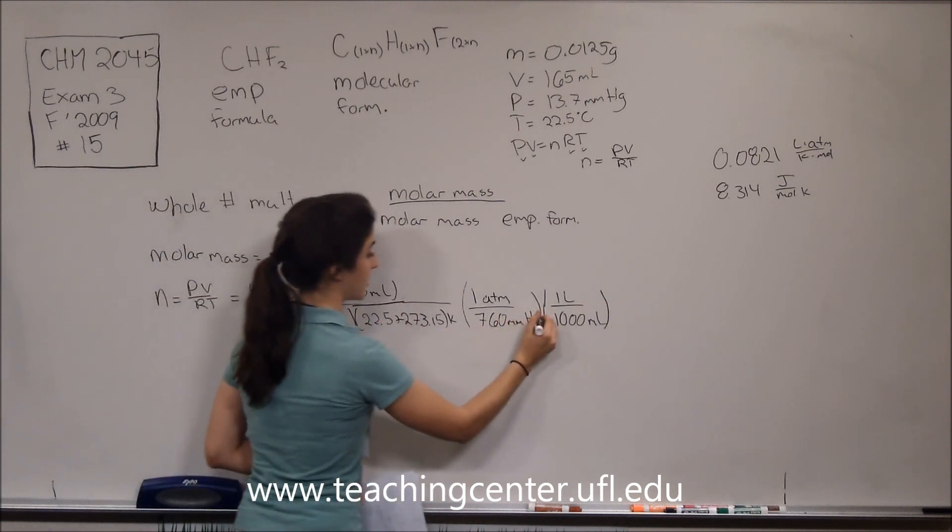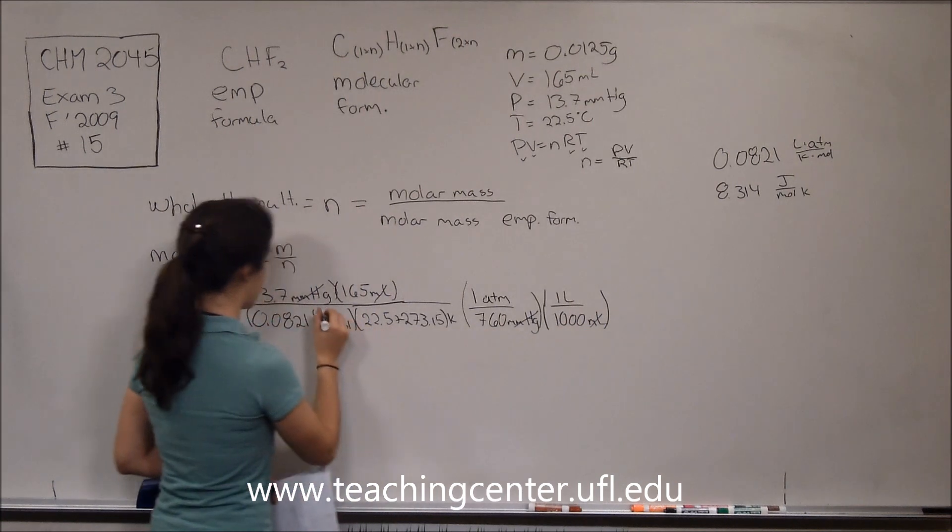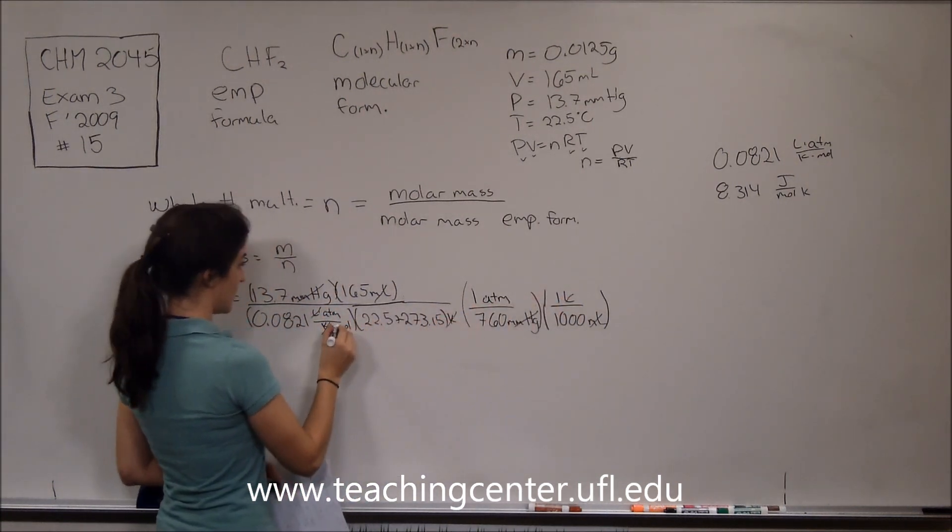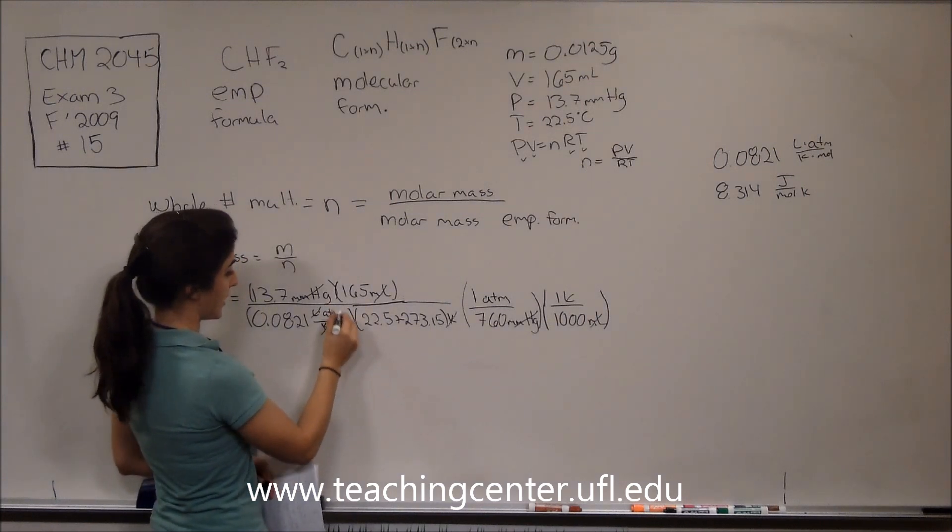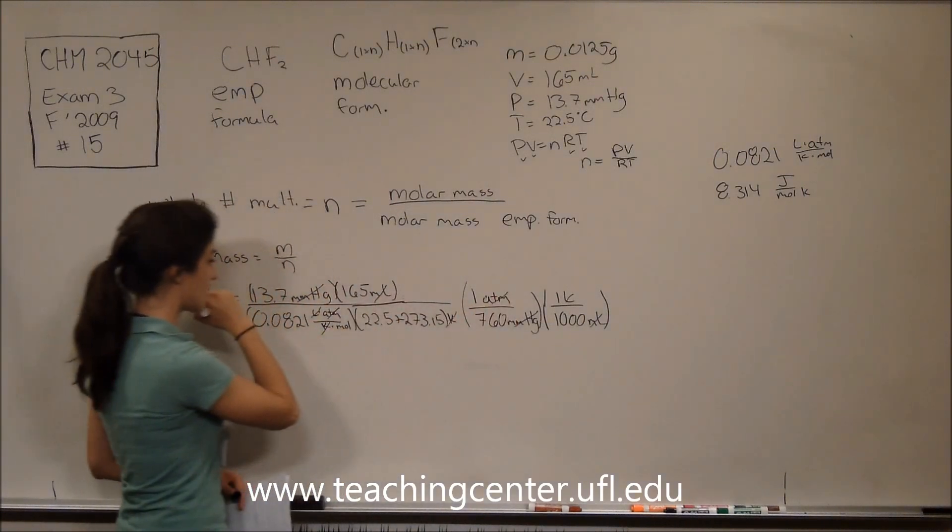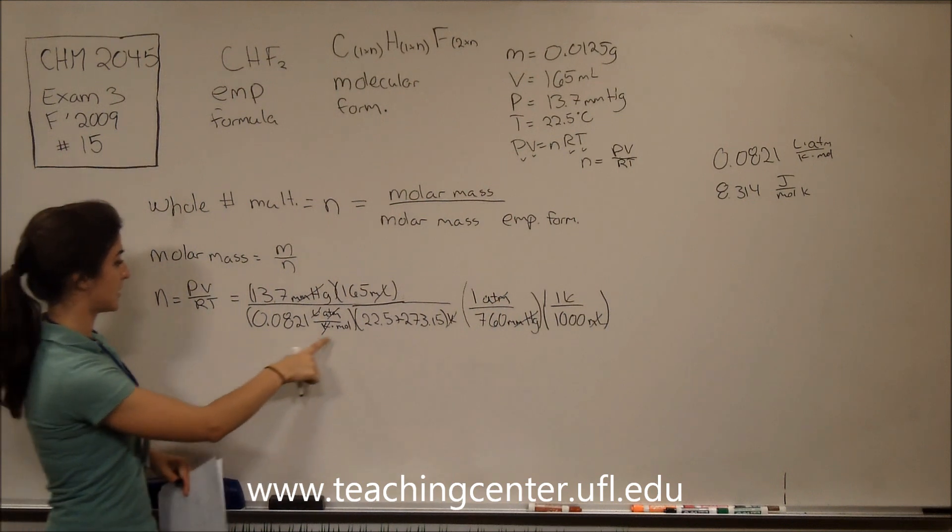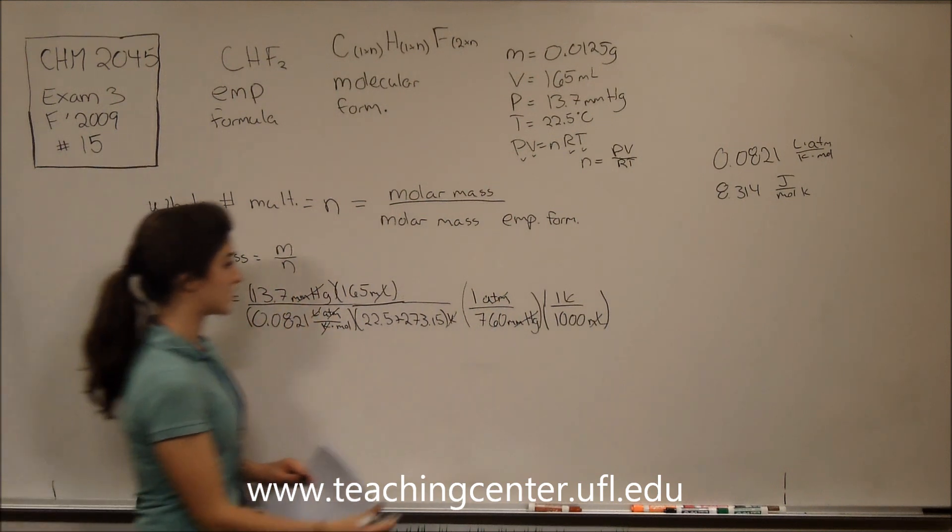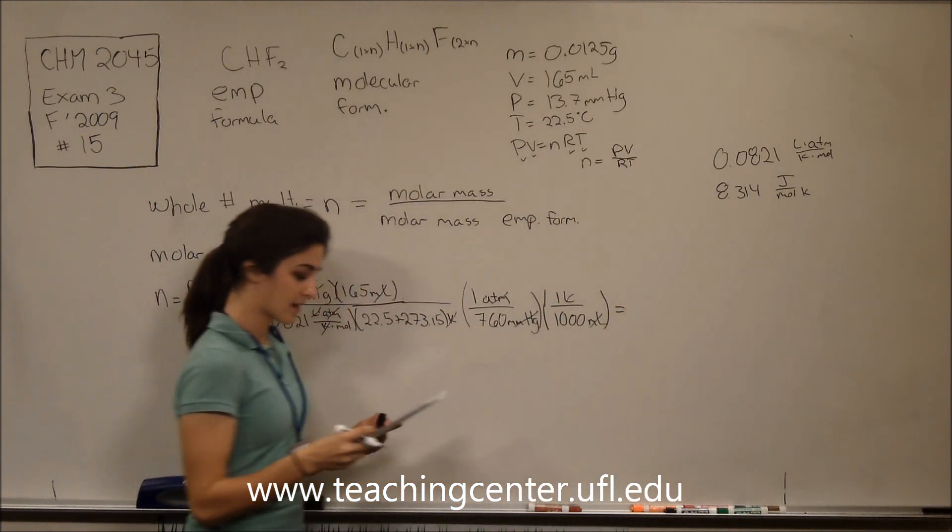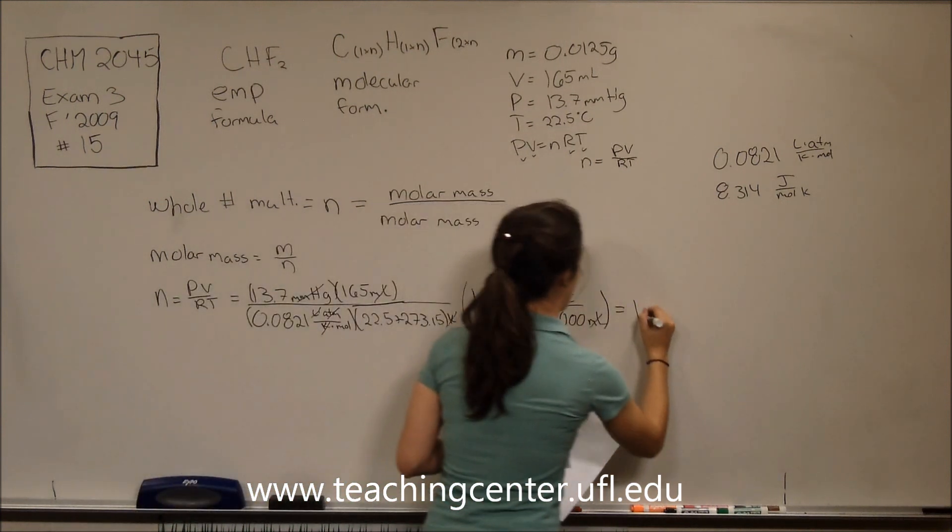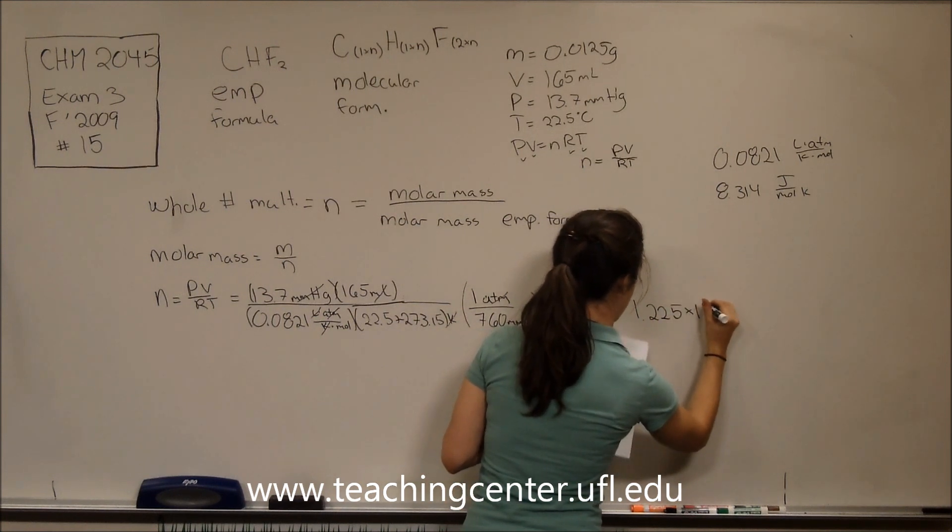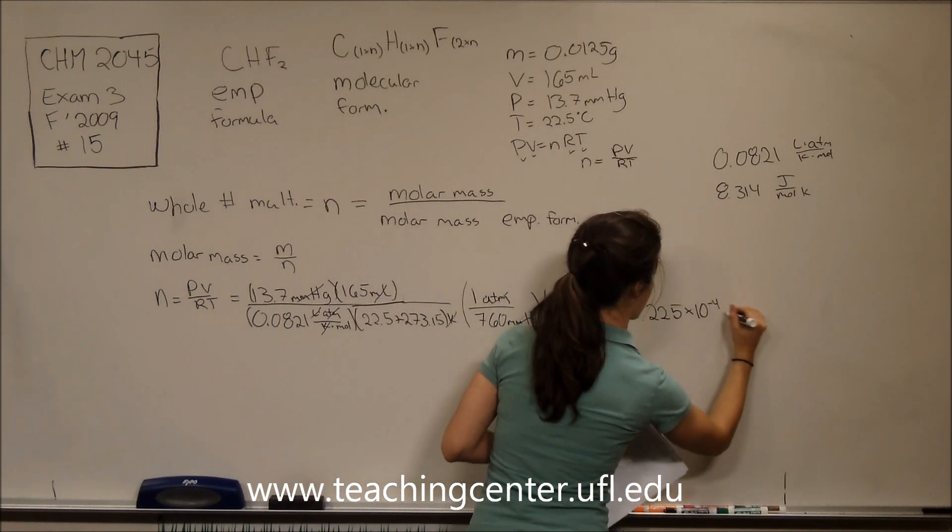Now we should cancel all of our units to make sure we have our equation properly set out. So millimeters of mercury cancel, milliliters cancel, liters cancel, Kelvin is going to cancel, and atmospheres is going to cancel. So the only thing that we have left here is moles, which is going to end up being on the top of our equation.